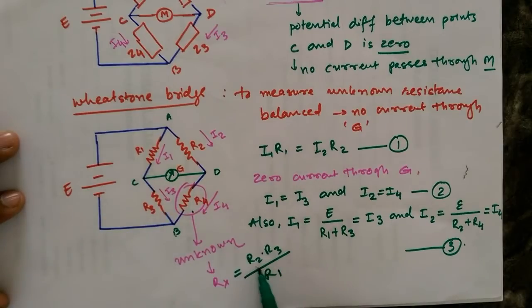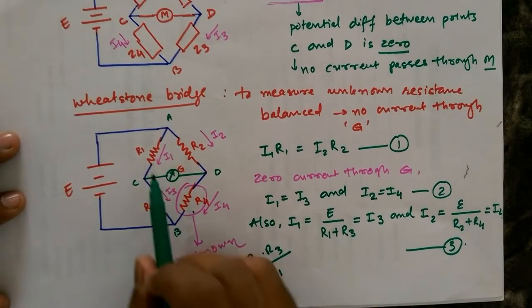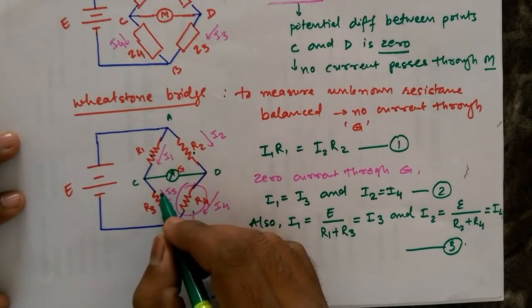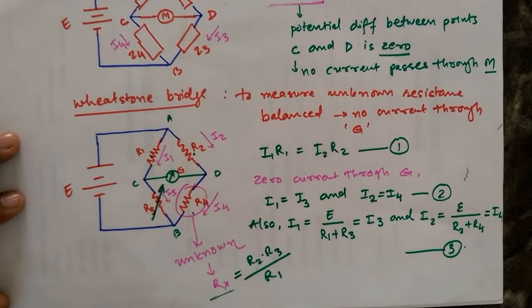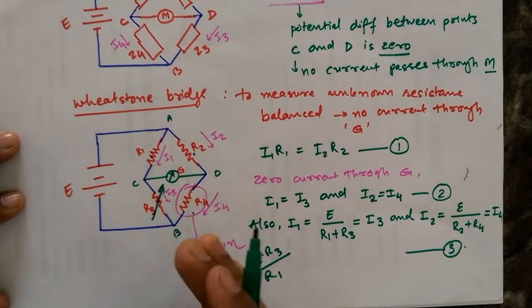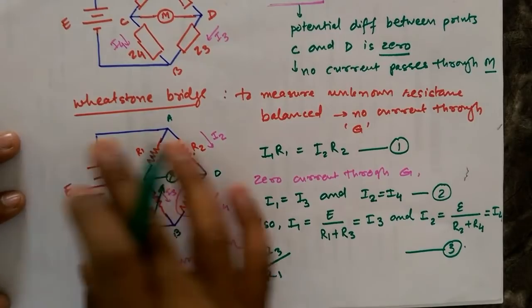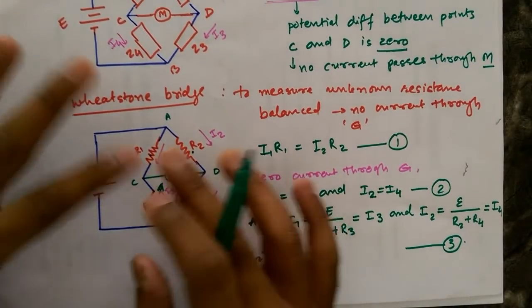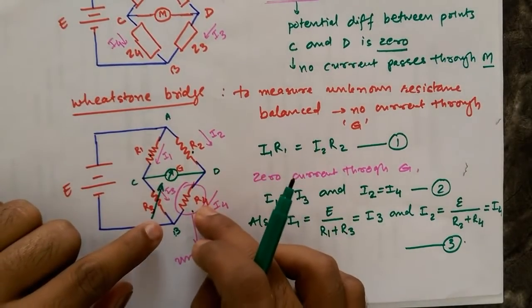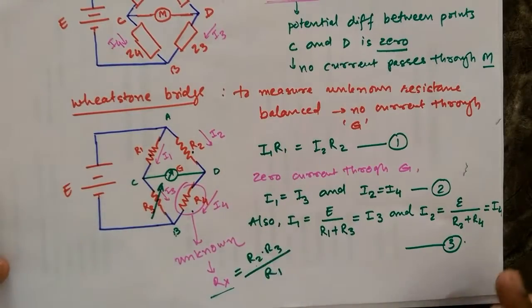To find out this value, R2, R3, and R1 should be known, but it is not necessary to change all these values to find out the value of Rx. If R1 and R2 are fixed, we can put a potentiometer or variable resistor at this place at R3. R1 and R2 will be fixed; we have to just vary R3 in such a way that the ratio will give us the Rx.